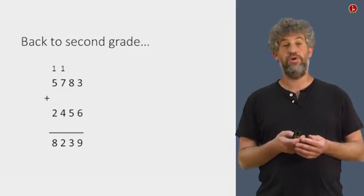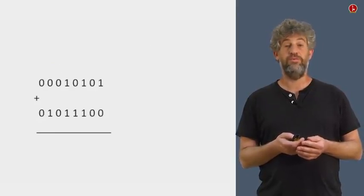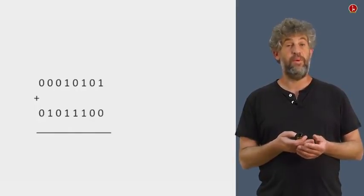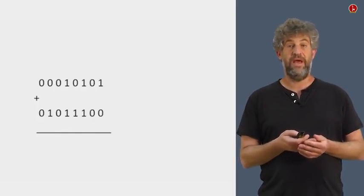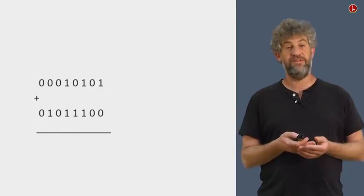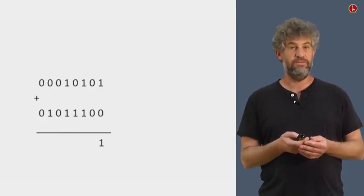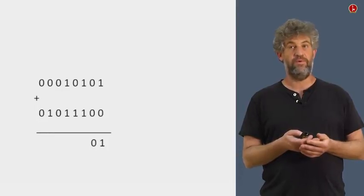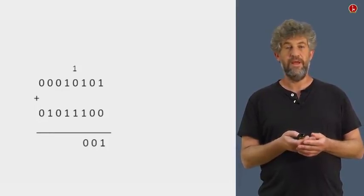So exactly the same thing we're going to do in binary numbers, only it's going to be much, much easier. So we take one plus zero, the rightmost two digits, and we need to add them. And that's easy, one plus zero is one, we can write it down. If we have zero plus zero, that's also going to be very easy. We can write them down.